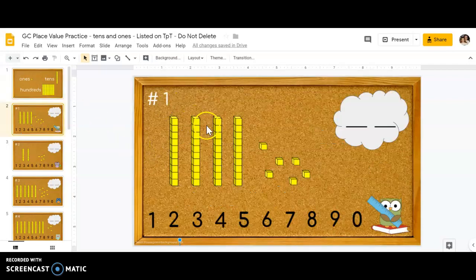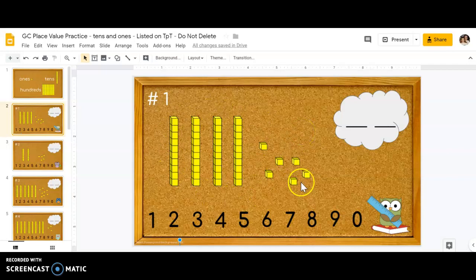So let's go to our first practice one. What you need to do is count the base ten blocks and then make the number in the cloud. I have two lines, one for your ones place value and one for your tens place value.